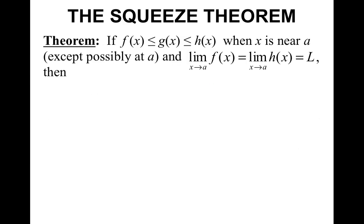So the squeeze theorem — a very important theorem, kind of fun too. This theorem says if f of x is less than or equal to g of x, and g of x is less than or equal to h of x, when x is near a, except possibly at a, and the limit of f of x equals the limit of h of x, which we are going to say is some value L, then we can say that the limit of g of x equals L.